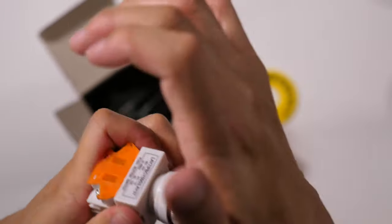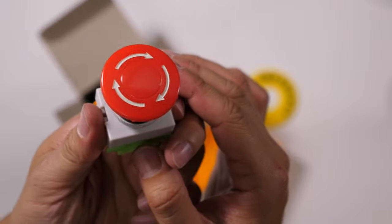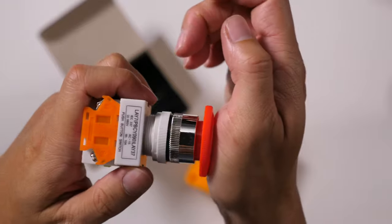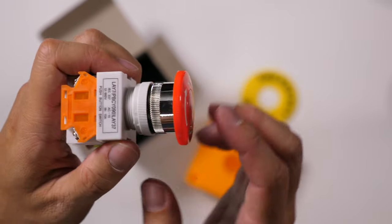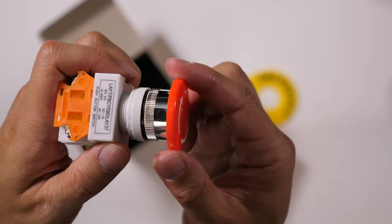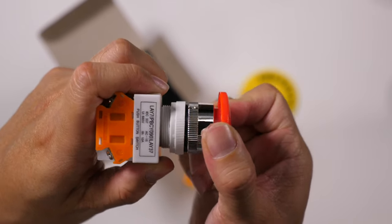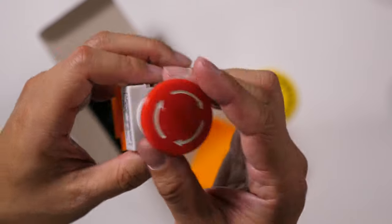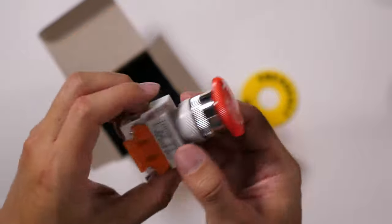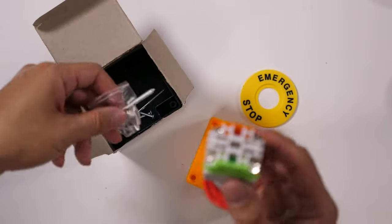I think you need to twist it, then it pops up. Push, then it clicks and latches. Then you have to twist it, it pops up, and it unlatches so you can use it again. One side should be normally open, the other side is normally closed.